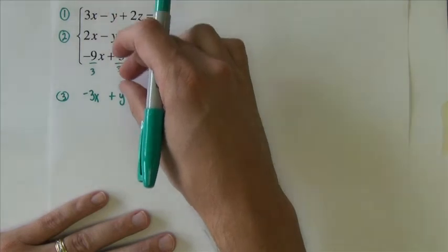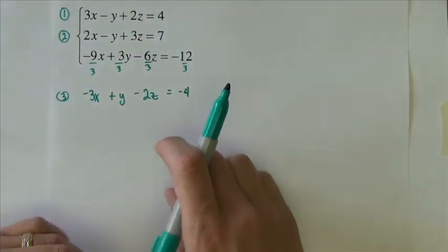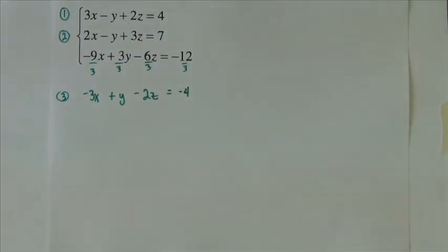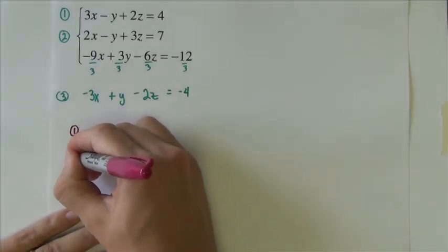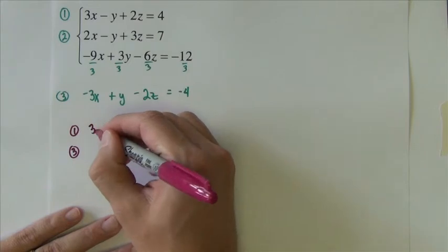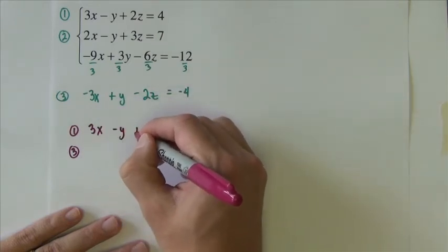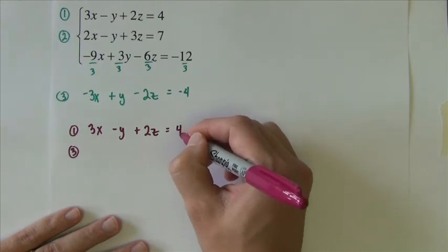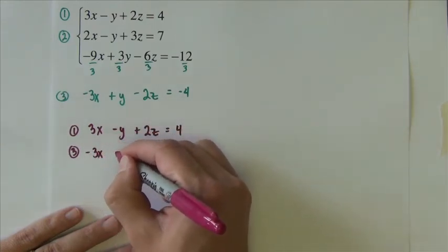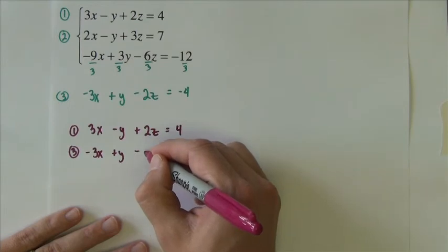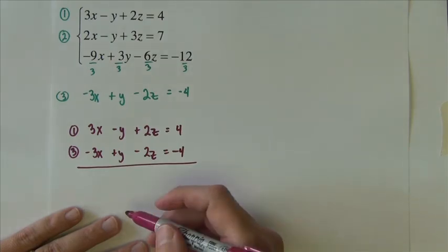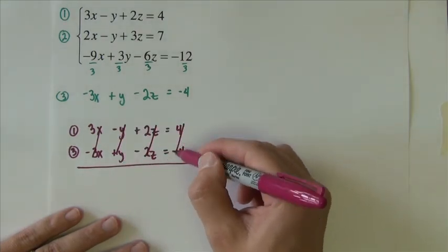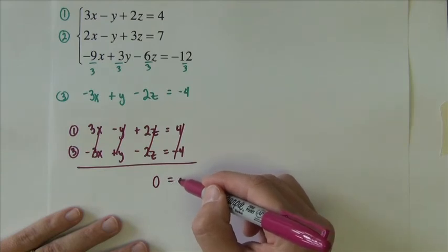Well, it looks like the y's are set up real nice to cancel. In fact, if I just take equations 1 and 3. So let's see, 3x minus y plus 2z equals 4, and negative 3x plus y minus 2z equals negative 4. Well, look what happens. Cancel. Cancel. Cancel. Cancel. Cancel. Cancel. 0 equals 0.